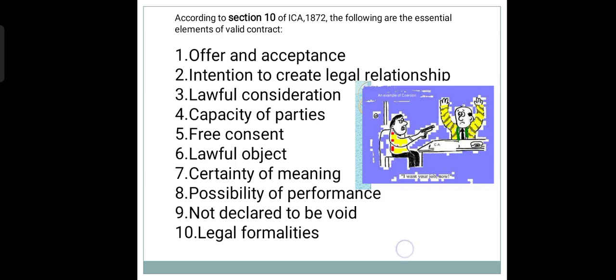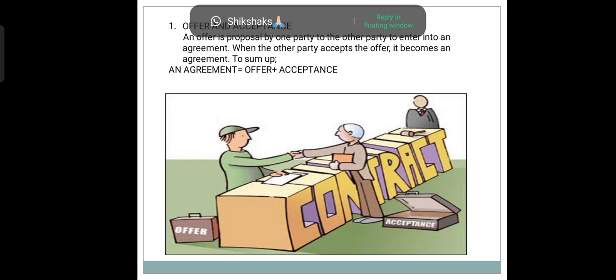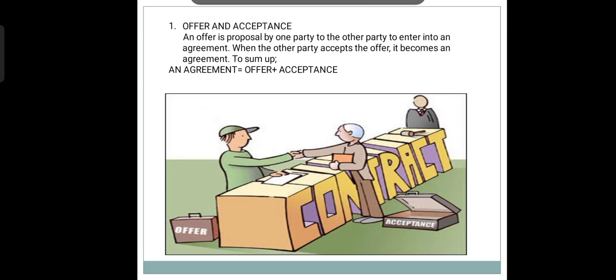Number 1: Offer and Acceptance. In order to make a contract, there must be an agreement. And in order to make an agreement, there must be an offer by one party and its acceptance by the other party. So this is the very first essential element of a valid contract — that there must be an agreement.